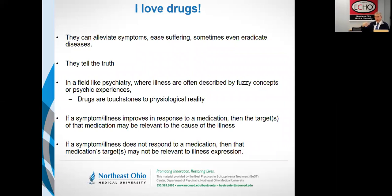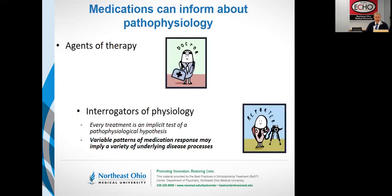Drugs interact with systems and they report back to us. If a symptom improves in response to a drug, then I have a very good idea that what the drug does in the body is somehow related to the expression of symptoms. And if I give a drug to somebody and their symptoms don't get much better, one explanation I should consider — that everybody who prescribes should consider — is that the things that the drug interacts with in the body are not that relevant to the symptoms which caused the clinician to administer the drug in the first place. Thinking in this way broadens thinking and can help us understand illness and better help our patients.